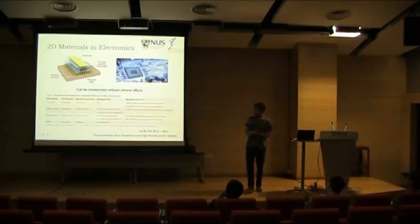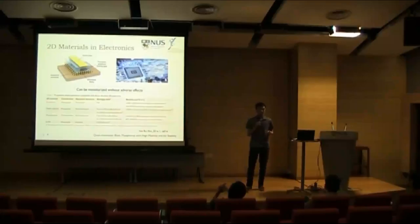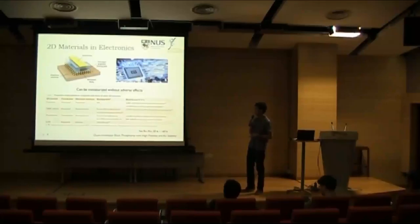However, graphene has a huge fatal flaw. So graphene itself has no band gap since it's semi-metal. And what this means is that if we fabricate a device based on graphene, it can never be switched off. And this is pretty bad, right? Because you'll be wasting a lot of power. And so material scientists have been researching on other layered materials that have band gaps.